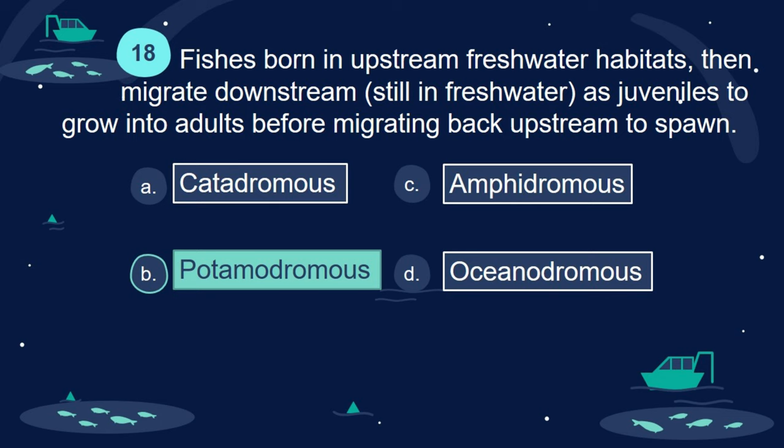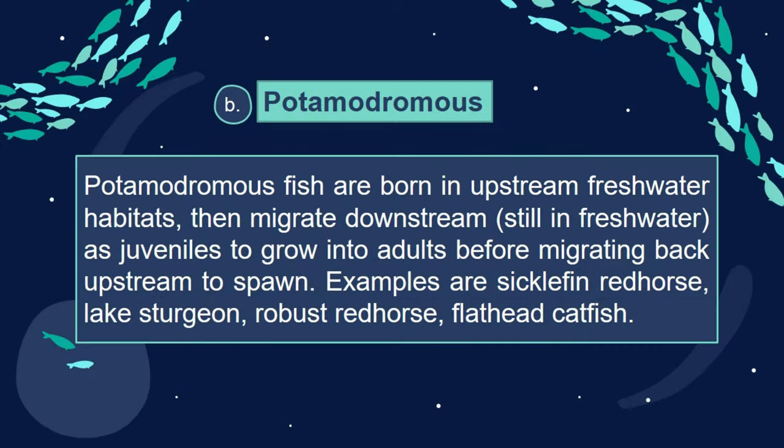Answer: B. Potamodromous. Potamodromous fish are born in upstream freshwater habitats, then migrate downstream, still in freshwater, as juveniles to grow into adults before migrating back upstream to spawn. Examples are sicklefin redhorse, lake sturgeon, robust redhorse, and flathead catfish.